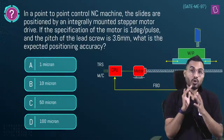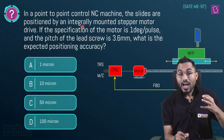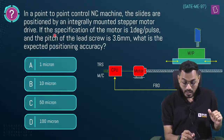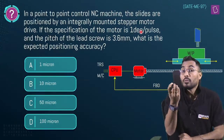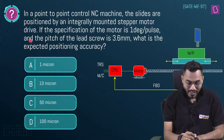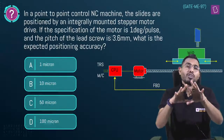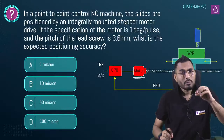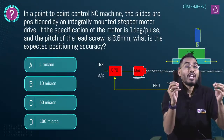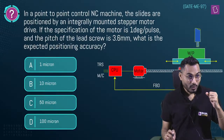Next question: a point-to-point NC machine has an integrally mounted stepper motor drive. The motor specification is 1 degree per pulse — meaning one electrical pulse rotates the motor by 1 degree. The pitch of the lead screw is 3.6 mm. What is the expected positional accuracy? Positional accuracy = BLU = positional error = control resolution — all synonyms.